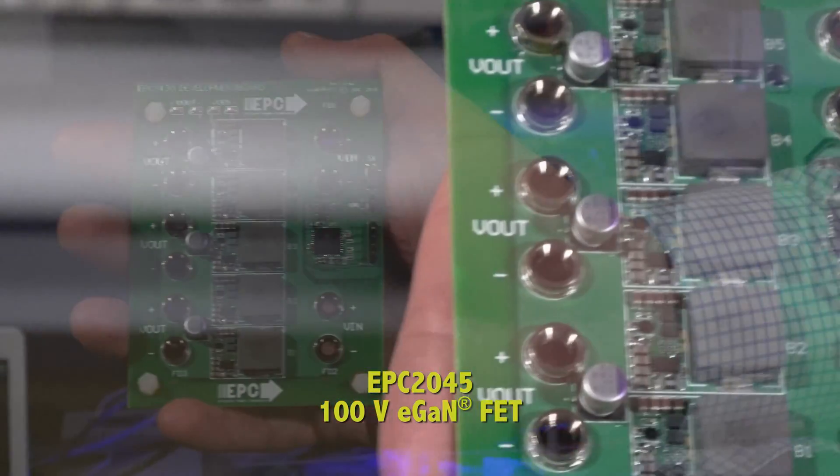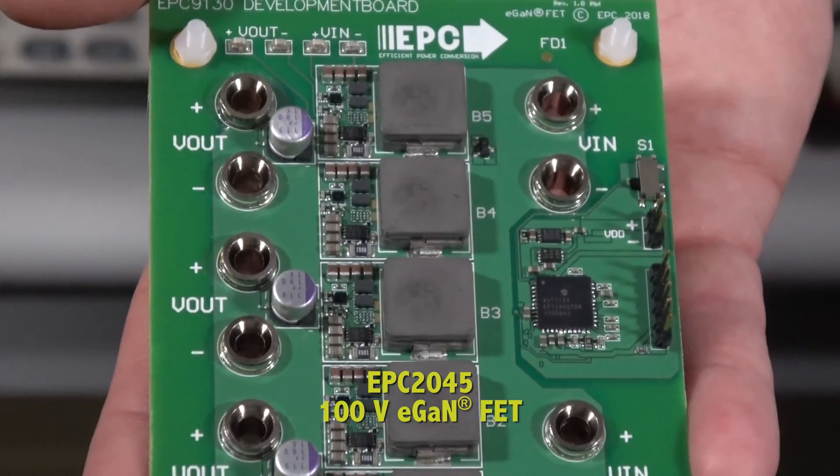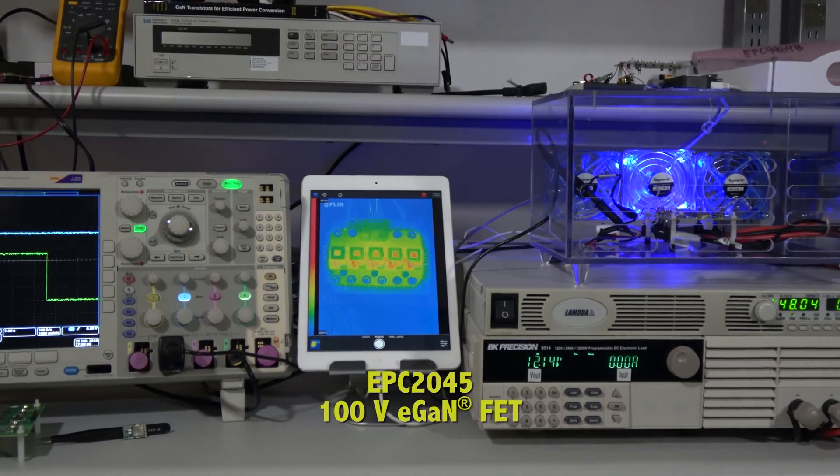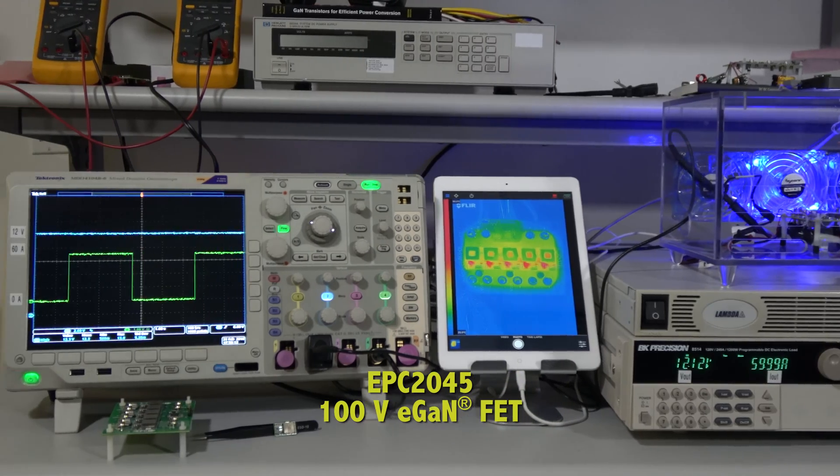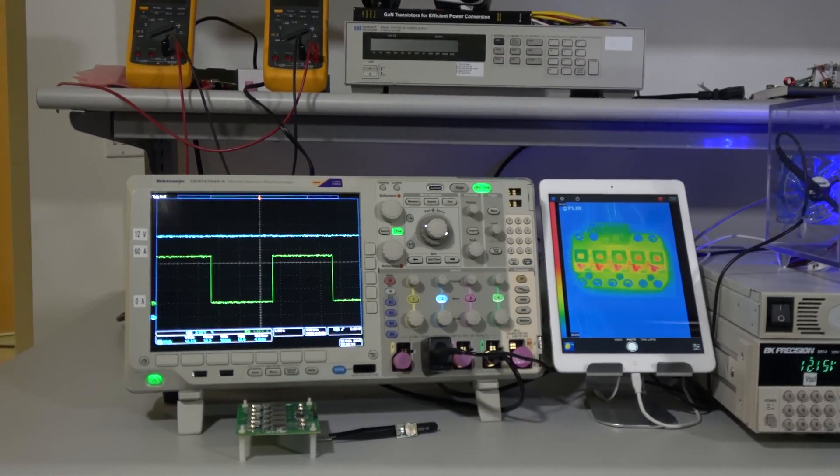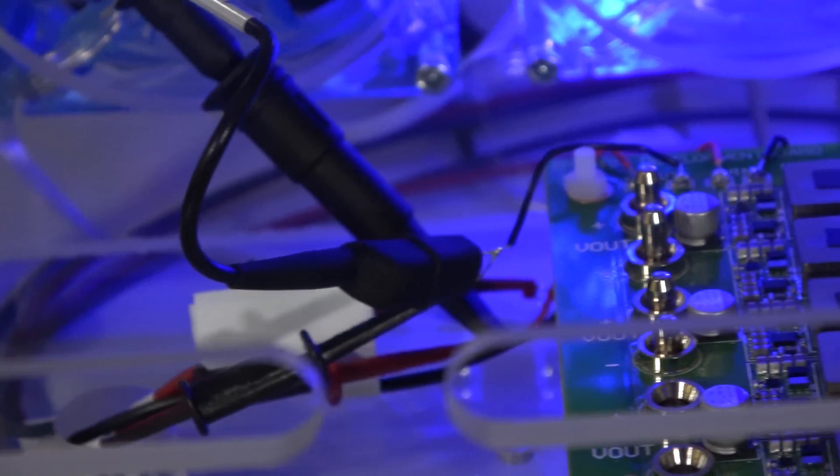The low on resistance and fast switching speed of the 100V EPC-2045 eGaN FET allows the frequency of this design to reach 500kHz in a hard switching application. Driving the FETs harder, higher frequencies can be achieved, further reducing the size of the passive components.